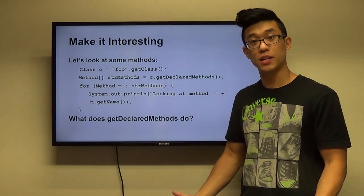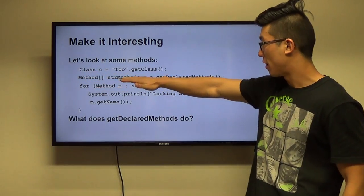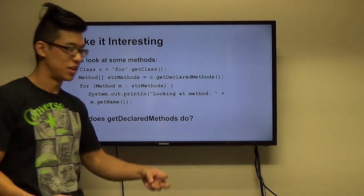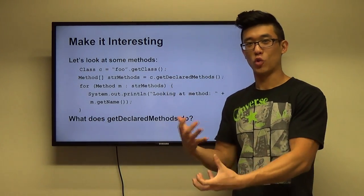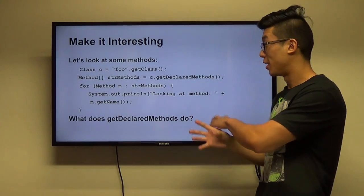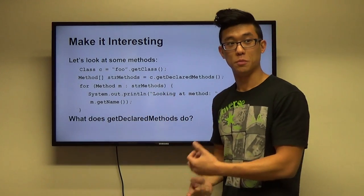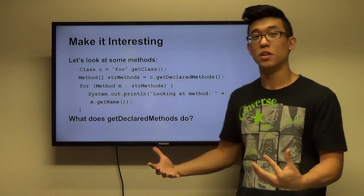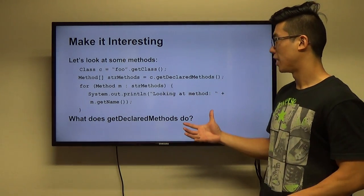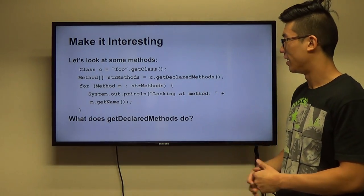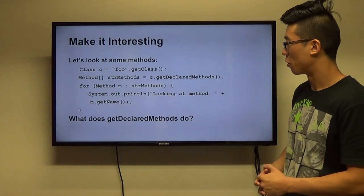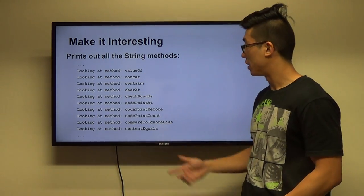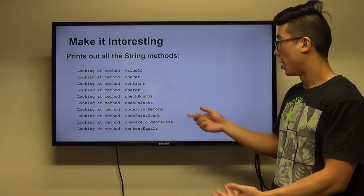Let's look at some of the methods in the String class. I've called the class and made a method array — an array of methods using the actual `Method` class. `getDeclaredMethods()` lists and returns all the methods in the String class, including public and private methods. You can call `getMethods()` without 'declared' but that returns only public methods. Using a basic enhanced for loop to print each method, we can see all the methods: `valueOf`, `contains`, `charAt`, `checkBounds`, `codePointAt`, and many more.